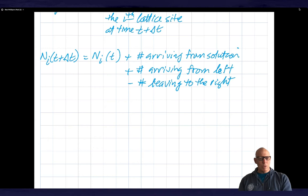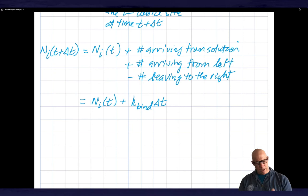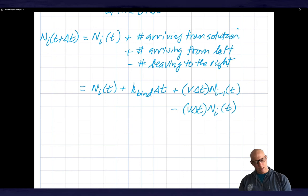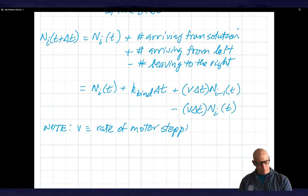So in the usual sort of format, I could rewrite this as n_i of t, and then plus k_bind delta T. I'm just trying to use the same notation that I have up top. And then plus v delta T n_i minus one at t. And then minus v delta T n_i at time t. And I have an important note here is that v is the rate of motor stepping. That's a number of steps per second, if you like. So it's not a, it's got units of one over time. So units are second inverse.